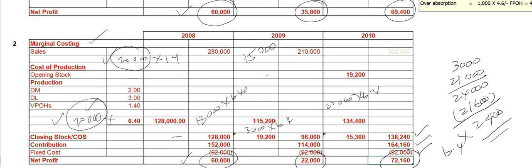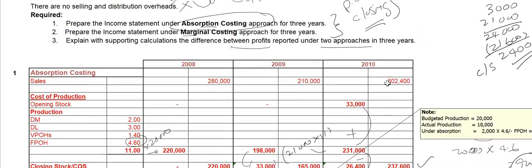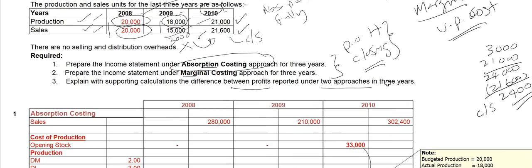What is this difference? You need to reconcile it — that will be your third question to answer: explain with supporting calculations the difference between profits reported under the two approaches.